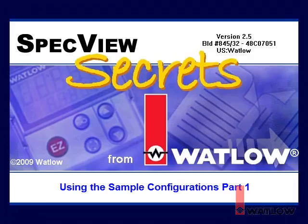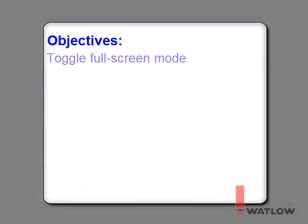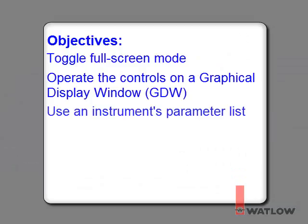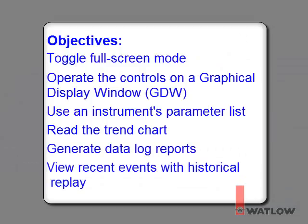Welcome to SpecVue Secrets, the video tutorial series that helps you use SpecVue Human Machine Interface software with Watlow products. In this installment you will learn how to toggle full screen mode, operate the controls on the graphical display window, or GDW, use an instrument's parameter list, read the trend chart, generate data log reports, and view recent events with historical replay.